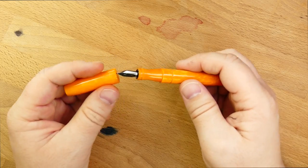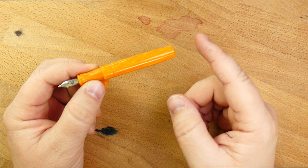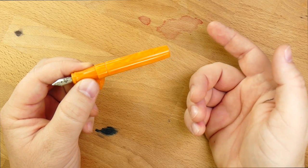So there are only a couple of complaints that somebody might have about the Model 45. The first one is that it's too short to take a converter. You have to have a cartridge or an eyedropper in this. It's not the right size for a converter.